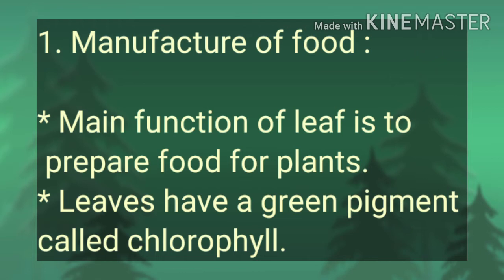The most important function of leaf is to manufacture food. The leaf has a green pigment called chlorophyll. Due to the presence of chlorophyll, leaves are green in color. The green leaves prepare food for plants in the presence of sunlight and chlorophyll by a process called photosynthesis.